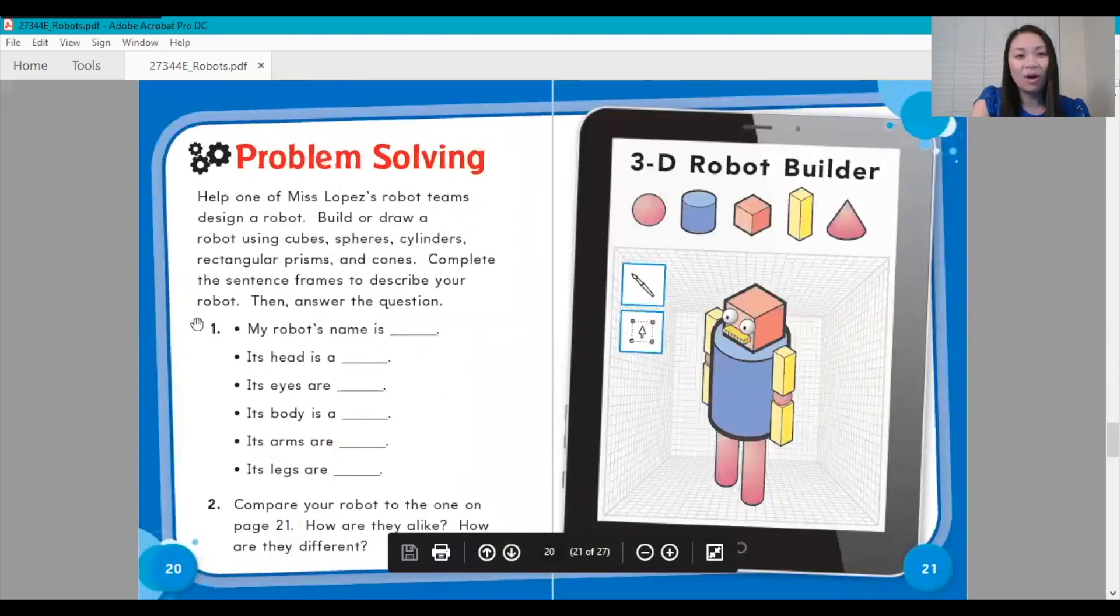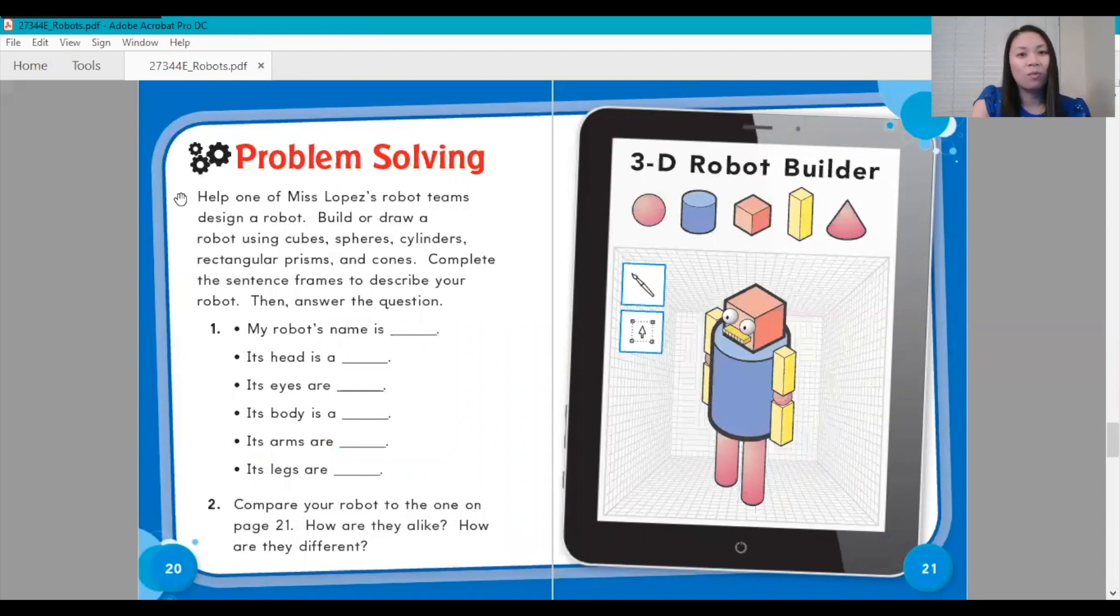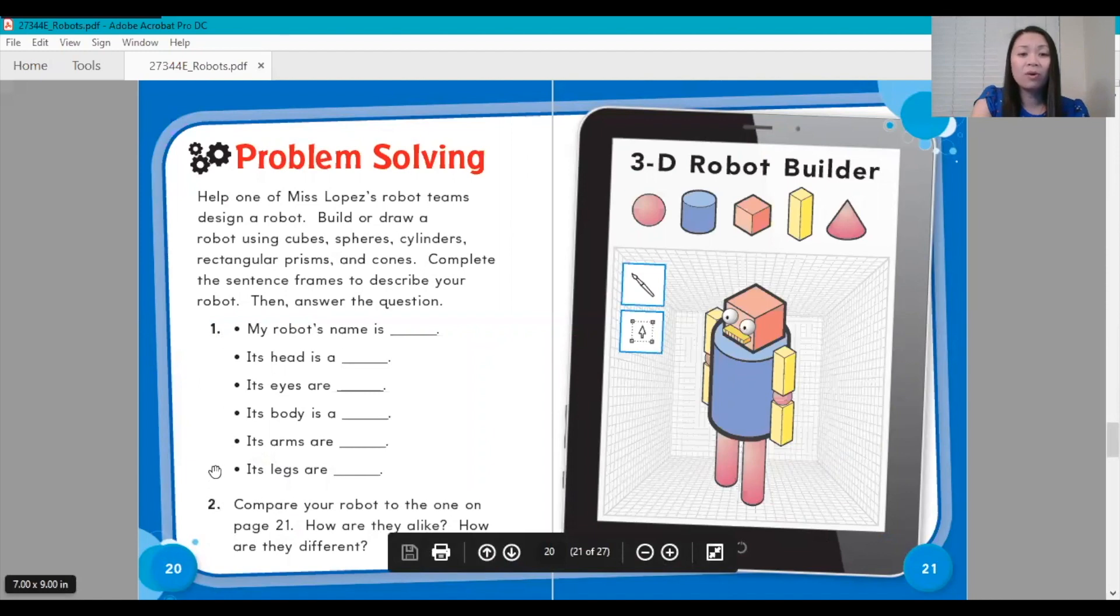Here we have an additional math exercise for you for problem solving. Help one of Miss Lopez's robot teams design a robot. Build or draw a robot using cubes, spheres, cylinders, rectangular prisms, and cones. Complete the sentence frames to describe your robot. Then answer the question. One: My robot's name is, its head is a, its eyes are, its body is a, its arms are, its legs are. Then number two: Compare your robot to the one on page 21. How are they alike? How are they different? You can work on this activity after our read.